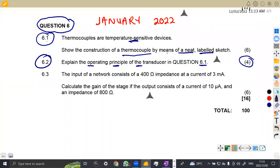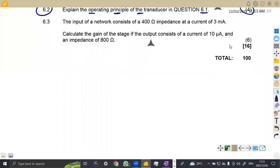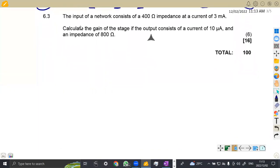Let's check the other part, which is 6.3. We are given that the input of a network consists of a 400 ohm impedance. This is the input, which means we've got the input resistance of 400 ohms. And the current of 3 milliamps, which is in the input. Calculate the gain of the stage if the output consists of a current.